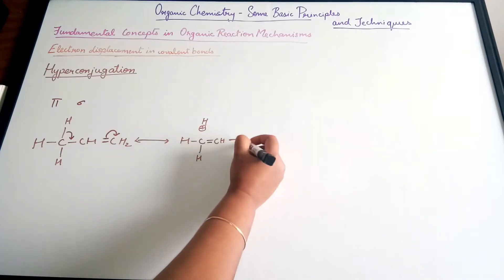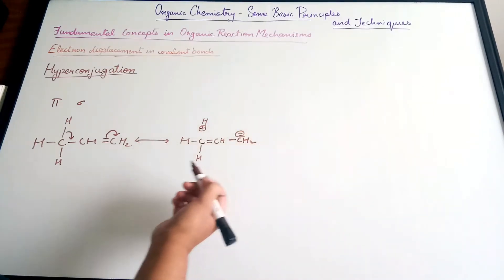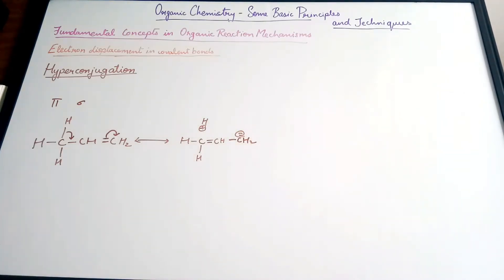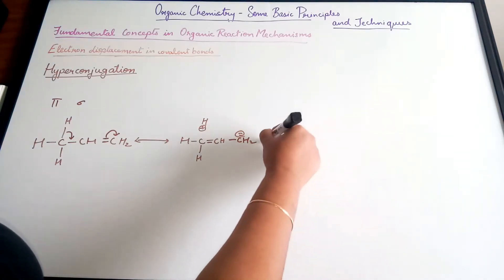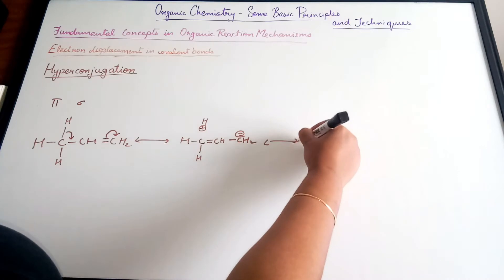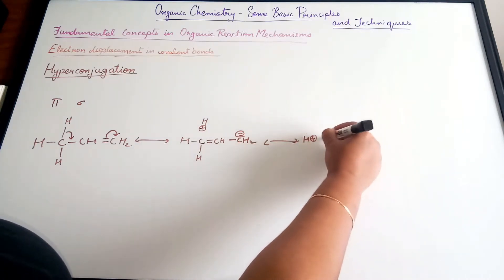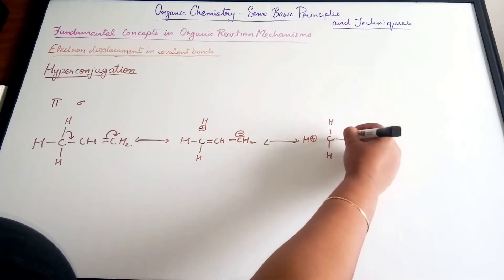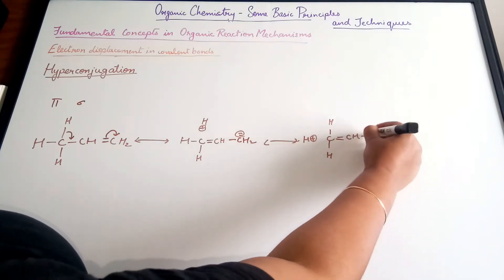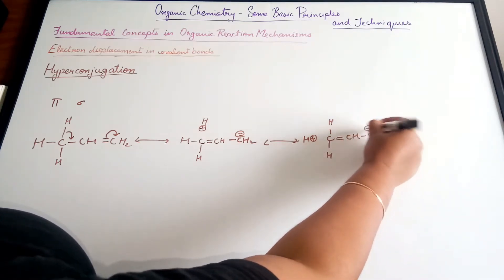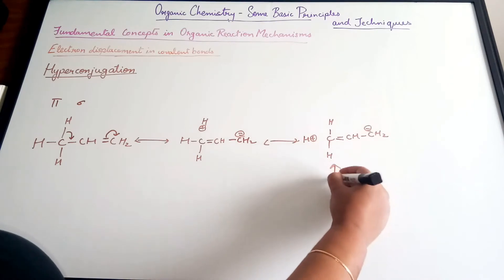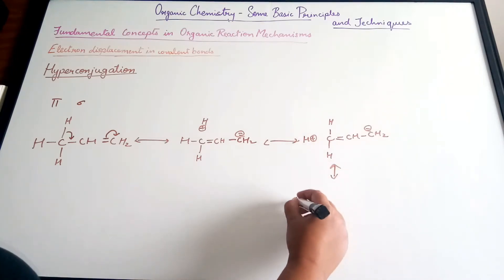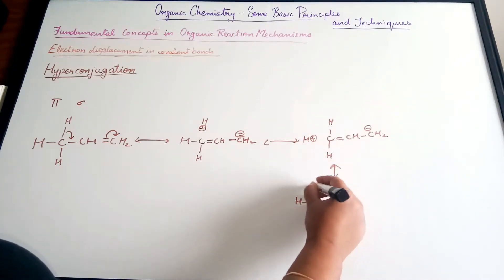Here you have a double bond; CH2 will get a negative charge. Now since there are three hydrogen atoms, three structures are possible. So you have: hydrogen with a positive charge, carbon-hydrogen double bond, CH — CH2 with a negative charge. Similarly, the third hydrogen can also form a positive charge.